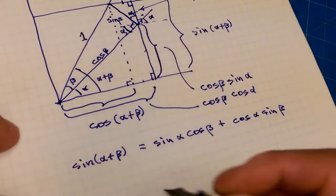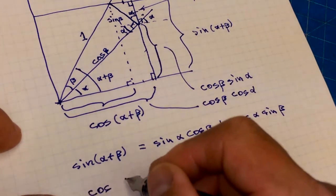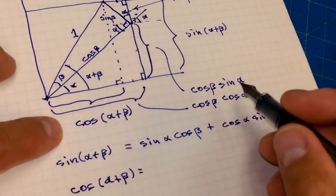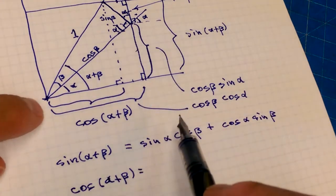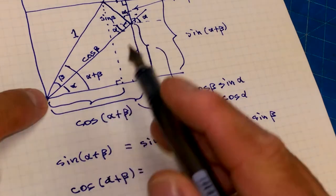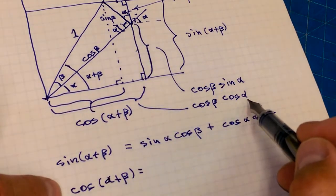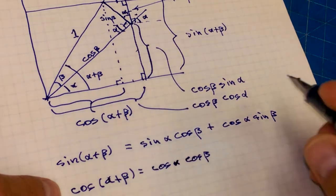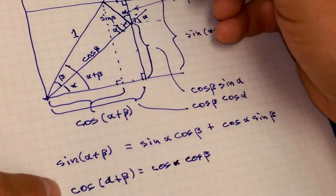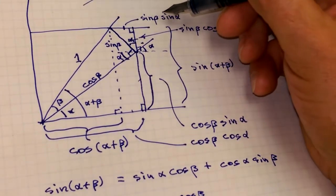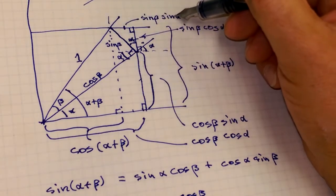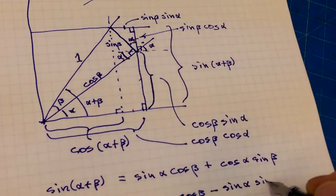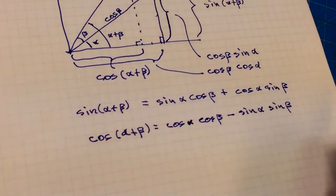Now let's take a look at cos of alpha plus beta. That's equal to this part here — cos alpha cos beta — minus this part here. Since these lines are parallel, it's sine alpha times sine beta. So cos of alpha plus beta equals cos alpha cos beta minus sine alpha sine beta. Nothing too mysterious at all. That's when you add two angles together.